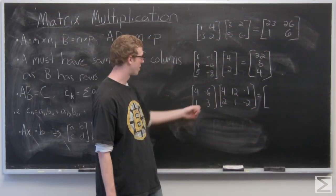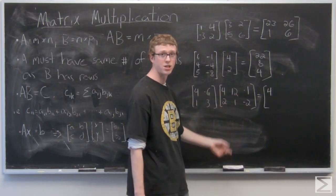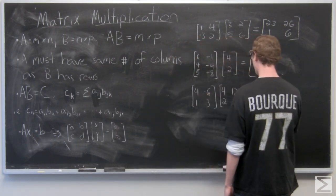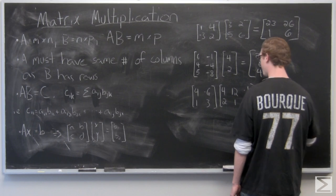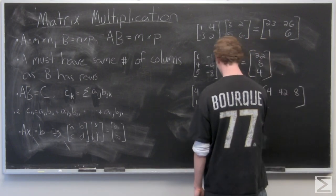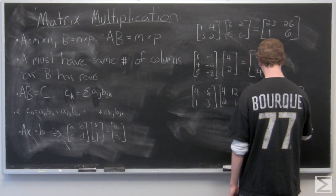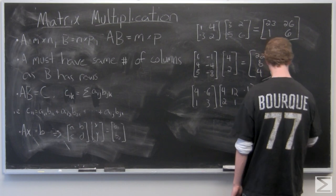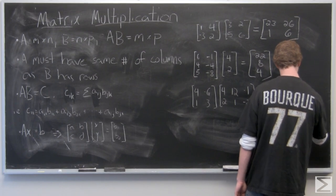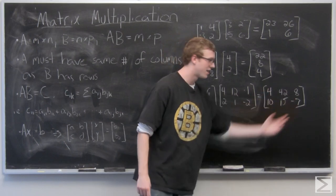It's not always going to be the case but let's just go ahead and multiply out here. 4 times 4 plus negative 6 times 2, and I'm just going to go right through and fill in these entries. You can try it on your own and see what the answer is. So the result matrix is the 2 by 3 matrix 4, 42, 8, 10, 15, negative 7.